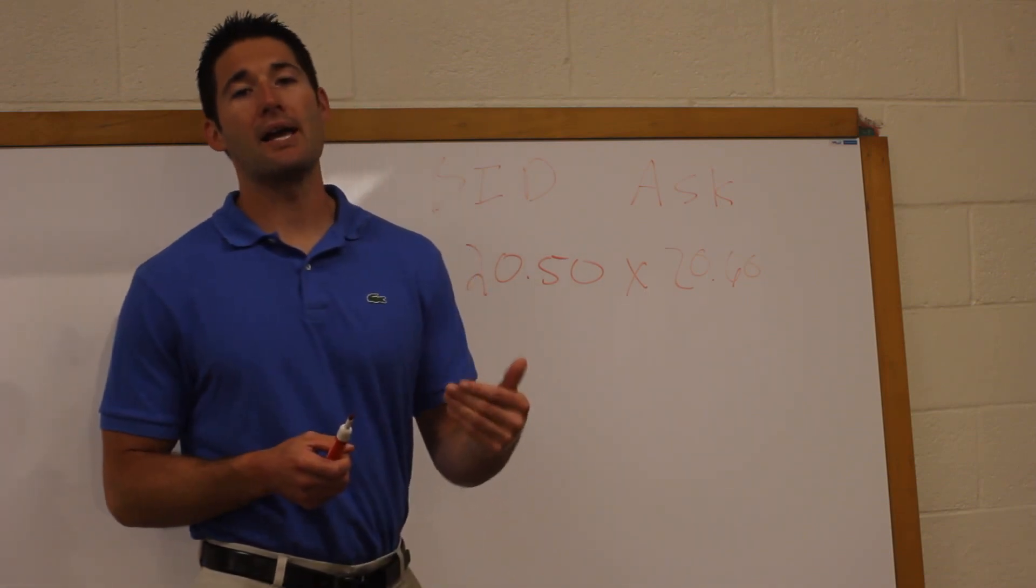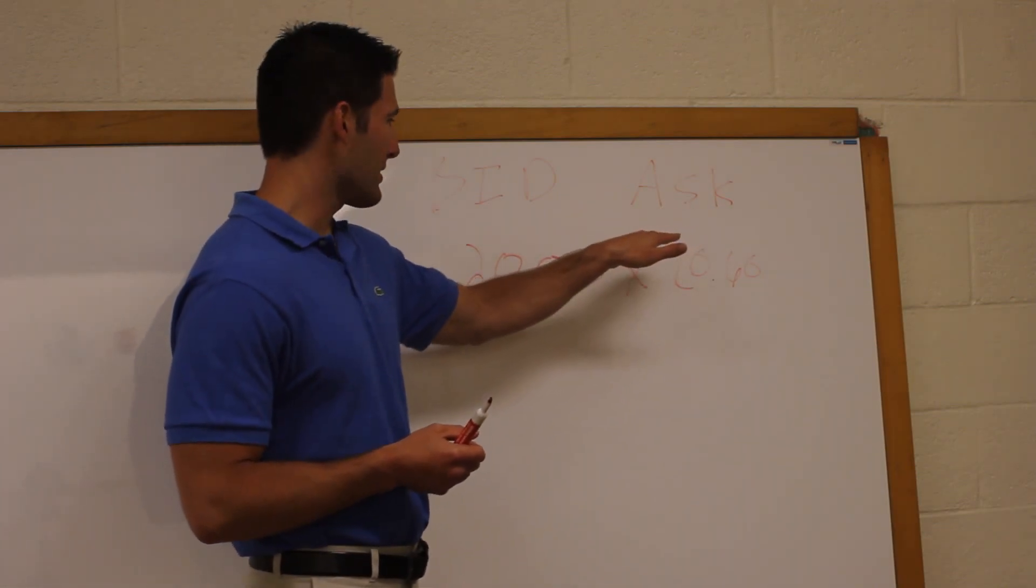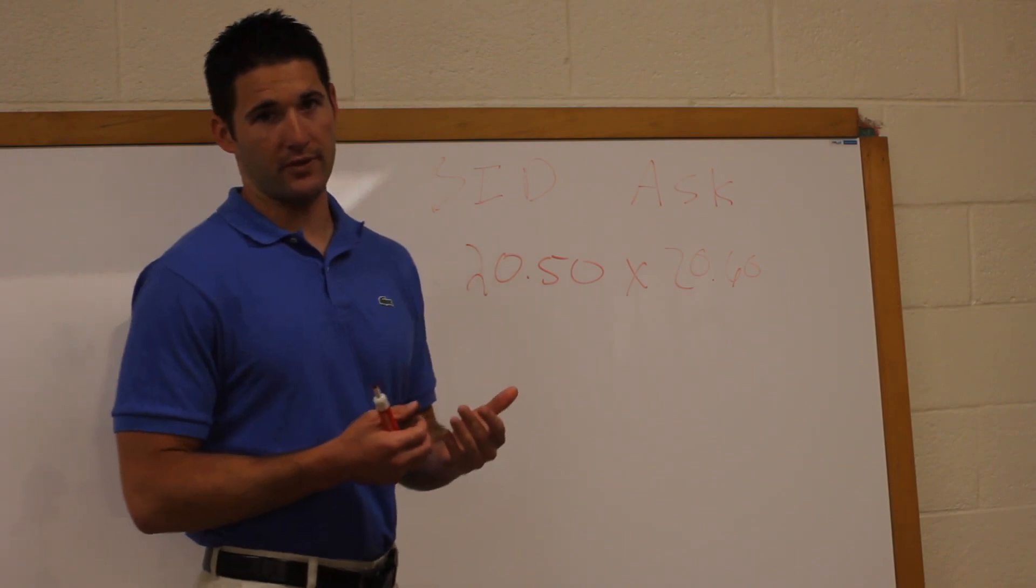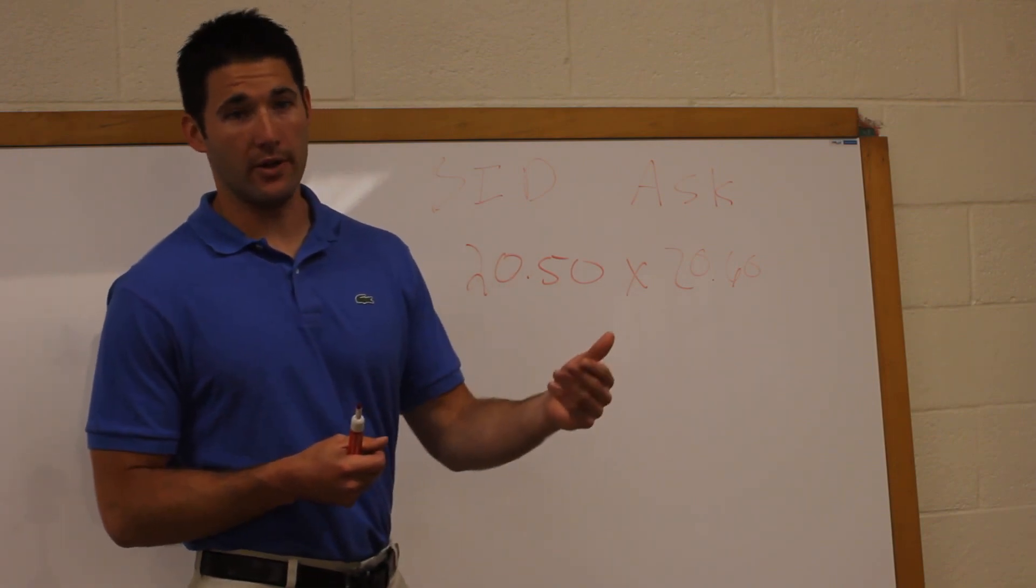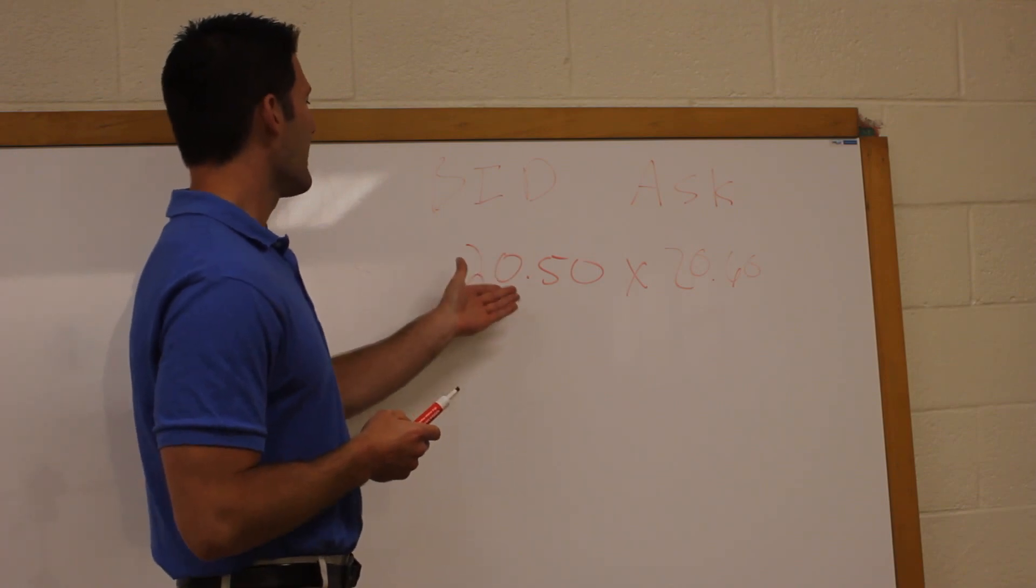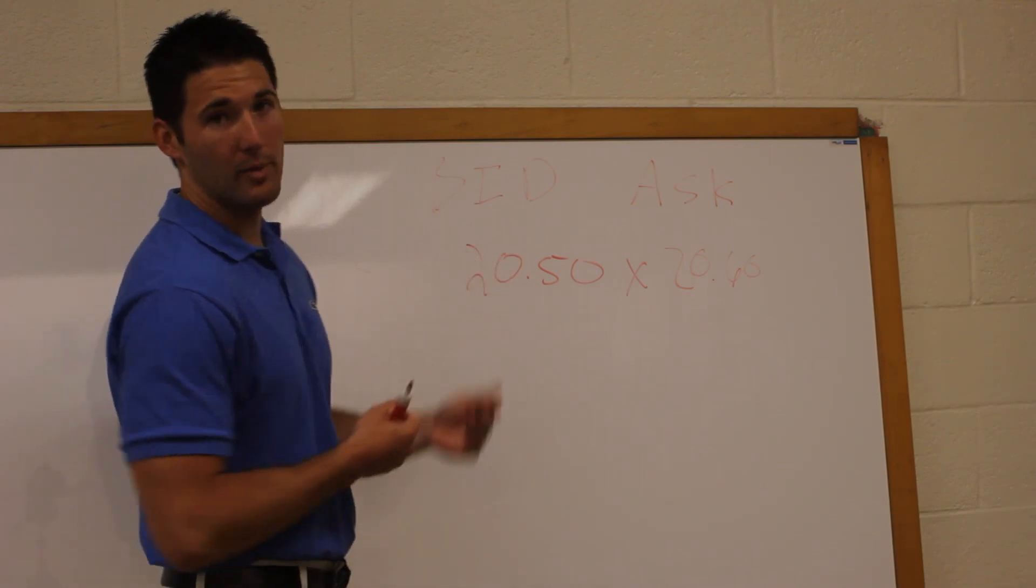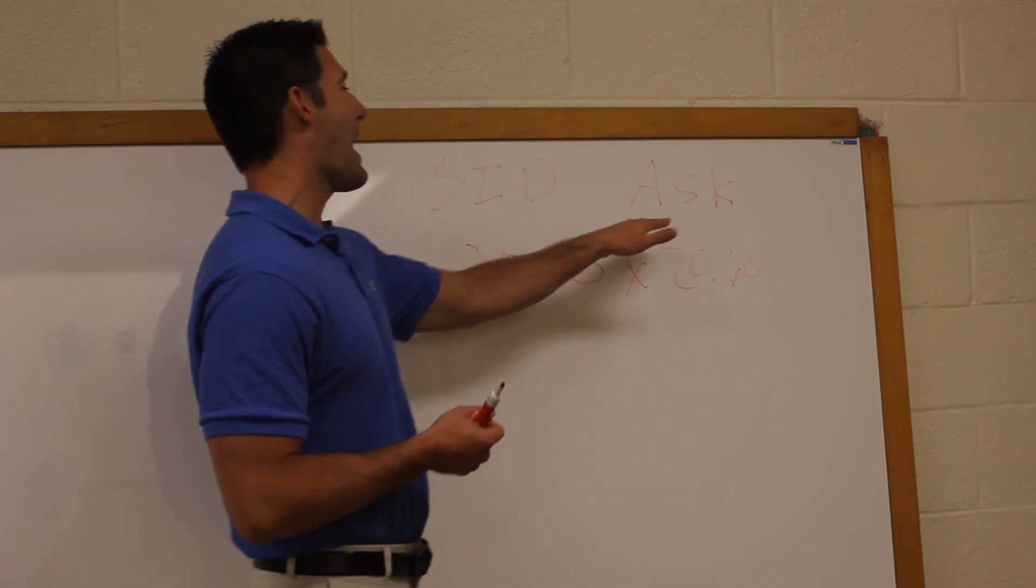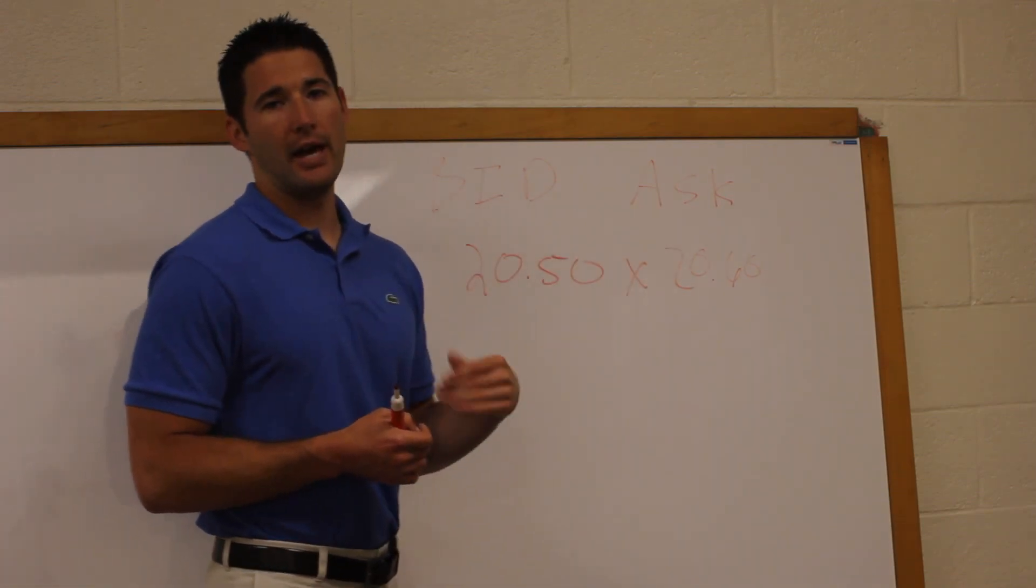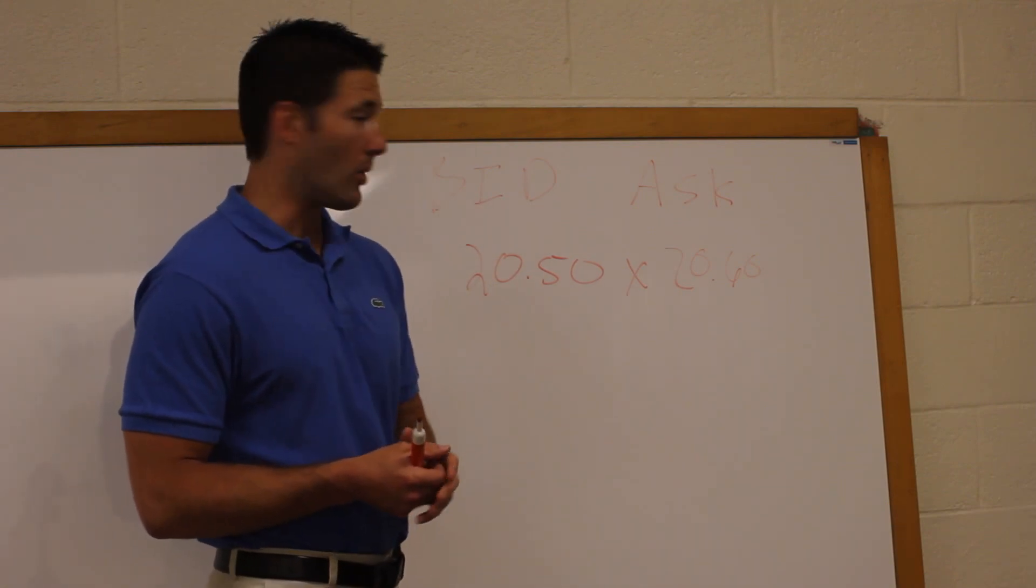So if you want to buy a stock, you're going to have to pay the ask. If you own shares of stock and you want to sell them, you're going to receive the bid. So the bid is the price that people will buy your stock from, or that the market maker will buy your stock from, and the ask is the price that people or the market maker is willing to sell it to you for.